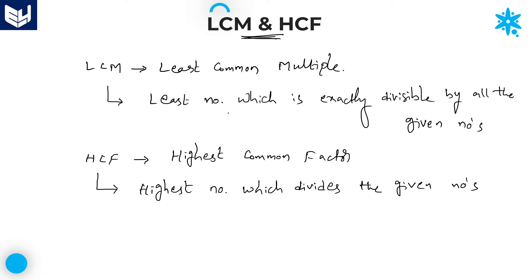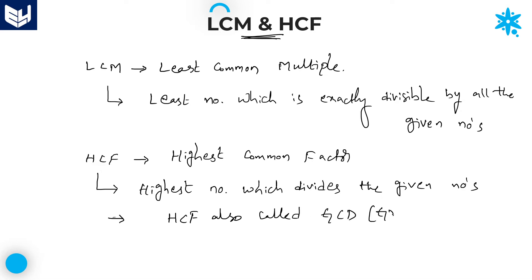So the difference: LCM is the least number which is exactly divisible by all the given numbers, and HCF is the highest number which divides all the given numbers. One more point — HCF is also called GCD, which stands for Greatest Common Divisor. HCF and GCD are both the same.